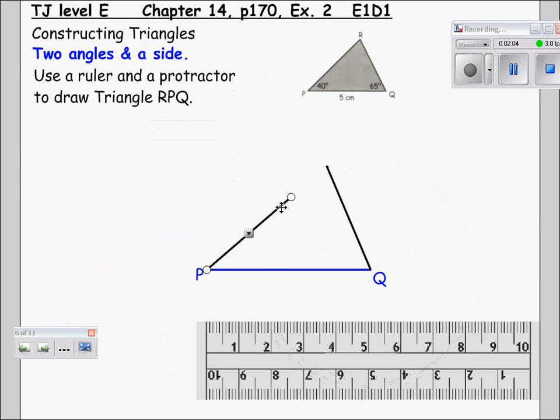The eagle eye amongst you will notice that this is not yet an accurate drawing of a triangle. To make this a full triangle we will extend the line coming from P until we meet the line coming from Q. As you notice, both lines now meet at point R.